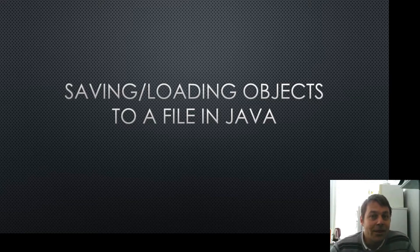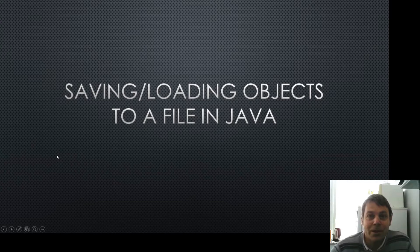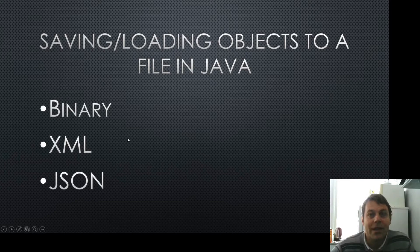There are many different reasons why you might want to take a Java object and save it to a file - you might want to load it into another program or save it and load it back later. You could create a custom file format, but there's no need since Java has simple methods to do this. In this video we're going to look at three methods: Binary serialization, XML using the JAXB library, and JSON using the Jackson library.